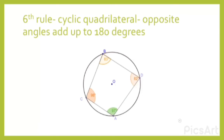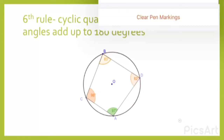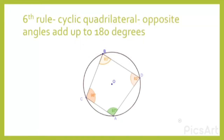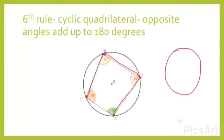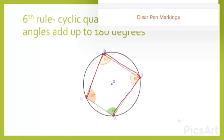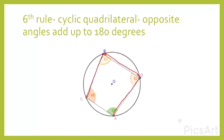The sixth rule is that in a cyclic quadrilateral, opposite angles add up to 180 degrees. A cyclic quadrilateral is a quadrilateral whose corners all touch the circumference of the circle. In other quadrilaterals, the shape may not necessarily reach the circle, but in a cyclic quadrilateral the corners always touch the circumference.